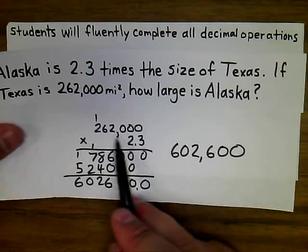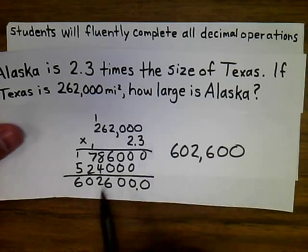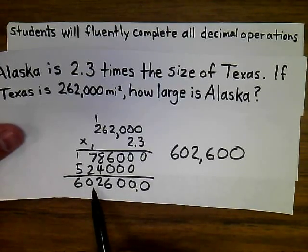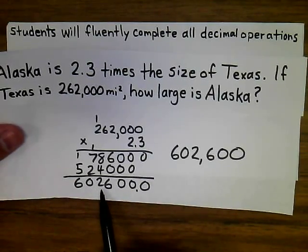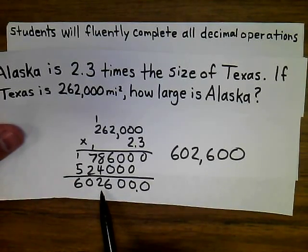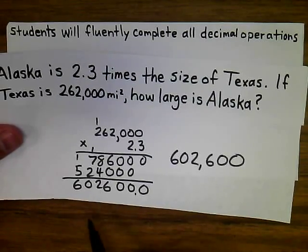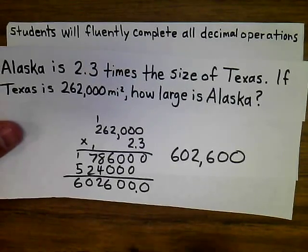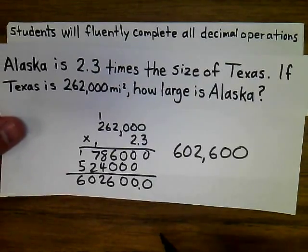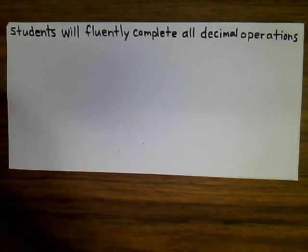Note: if we had miscounted those decimal places and placed the decimal incorrectly, we would have gotten 602 square miles — which would obviously be an unreasonable answer for the size of Alaska.